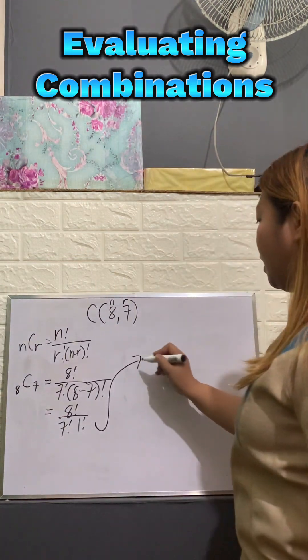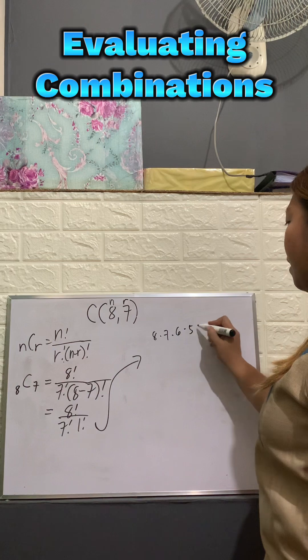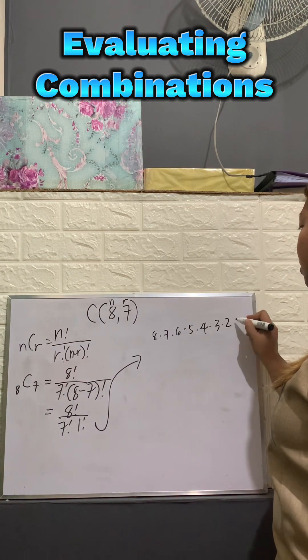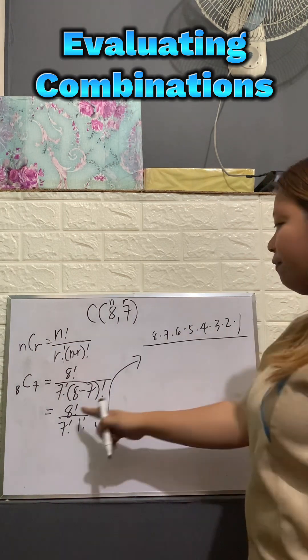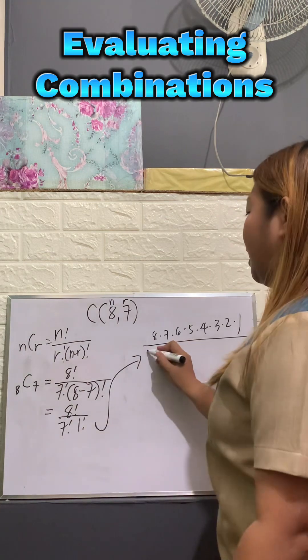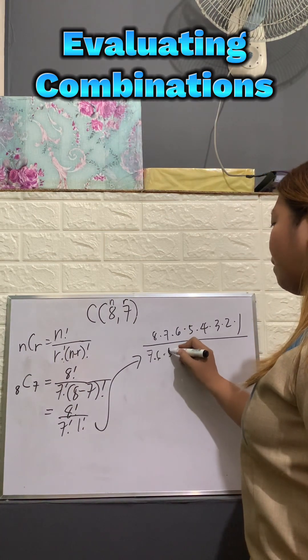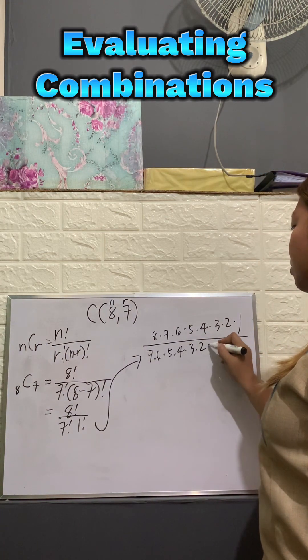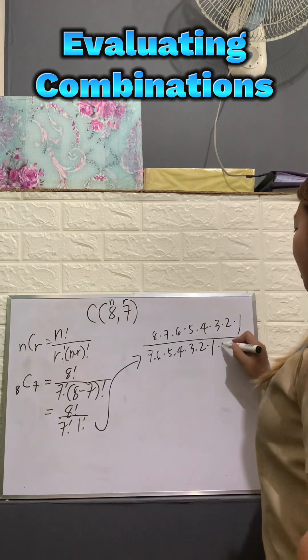So let's expand. We have 8 times 7 times 6 times 5 times 4 times 3 times 2 times 1. That's 8 factorial. How about 7 factorial? 7 times 6 times 5 times 4 times 3 times 2 times 1 and 1 factorial is just 1.